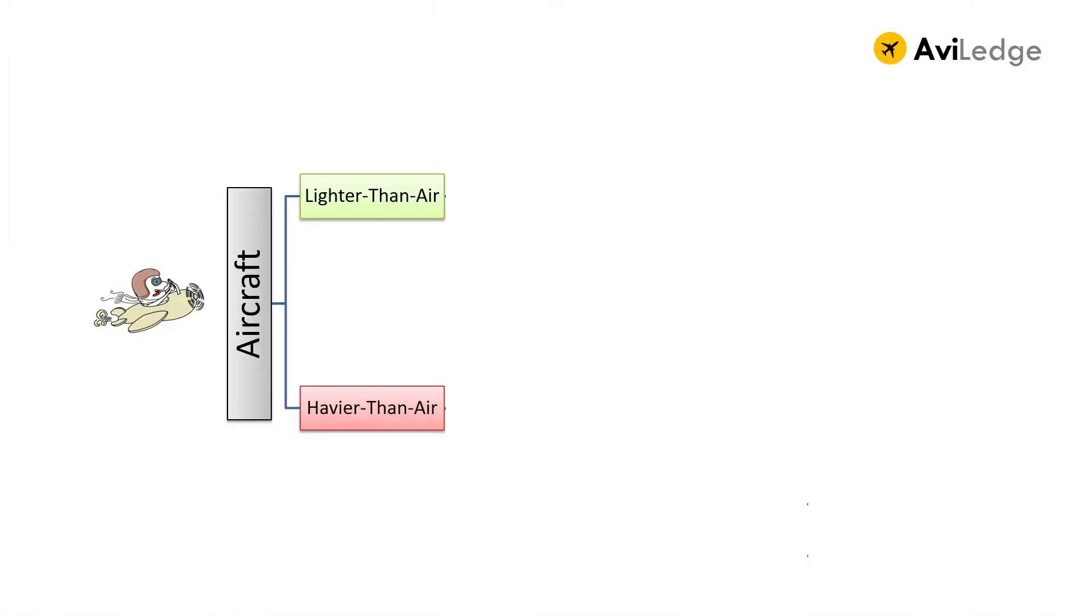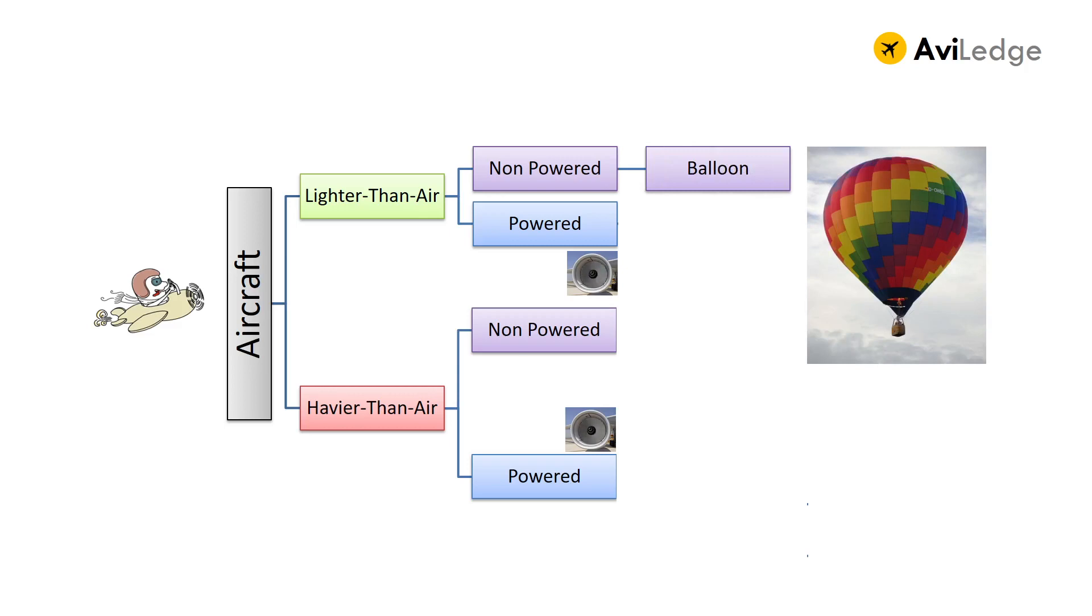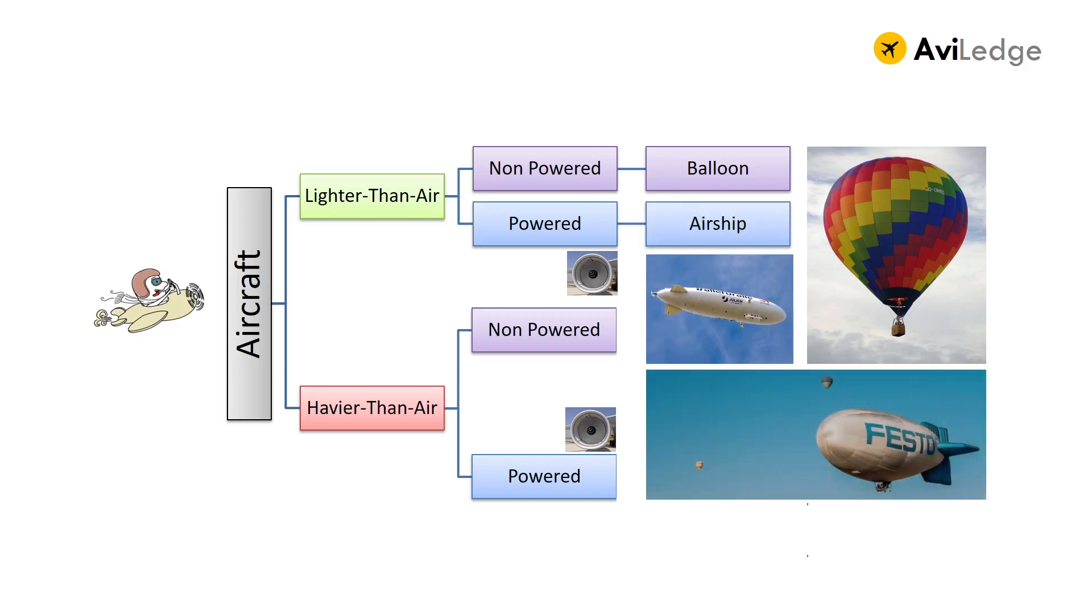Now both the lighter-than-air and the heavier-than-air aircraft can either be non-powered means without engines or powered means with engines. In lighter-than-air, non-powered category comes the balloons normally filled with hot air to make it rise and stay in air. In powered category comes airships which has the engine also to provide the forward thrust.